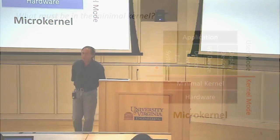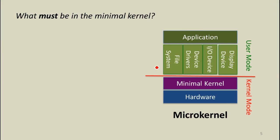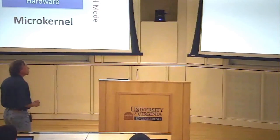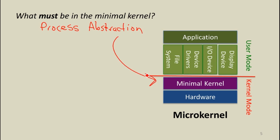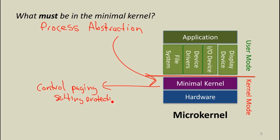What is the minimum functionality we have to provide in that minimal kernel? Can we get rid of it completely? If we want to have the abstraction of a process, the kernel needs to at least provide control that gives us memory isolation. So the kernel is at least going to be able to do things like control paging — the things that control whether or not a process can read some memory. That means at a minimum the kernel has to be able to create a process and transfer control to that process.